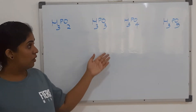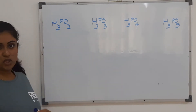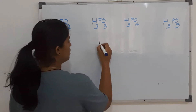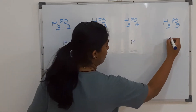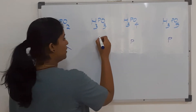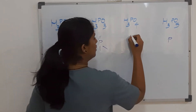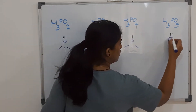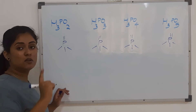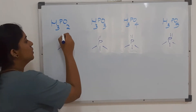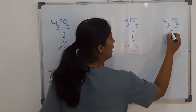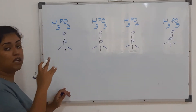Let's now draw the first four oxoacids — the first class that shows similarities in structure. All of them will have a phosphorus at the center, and each phosphorus can have a maximum of five bonds. We also know that all oxoacids of phosphorus have a P=O unit. So a P double bond O unit is formed for each of the four structures, giving five bonds around phosphorus.